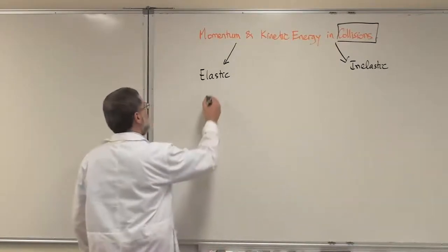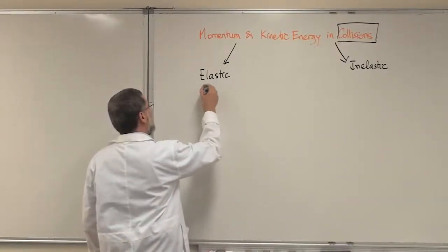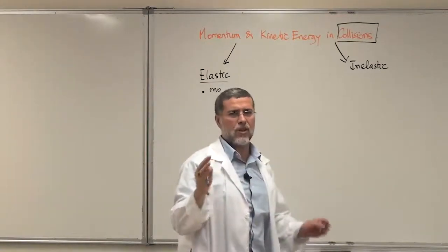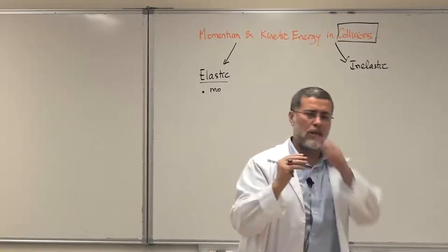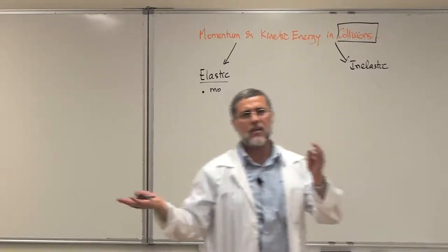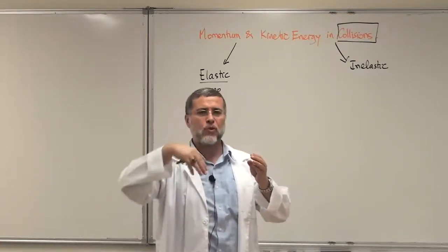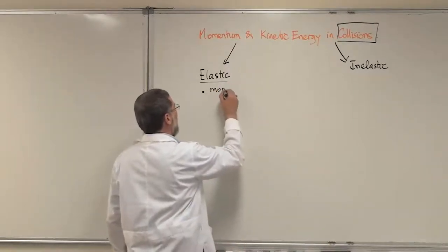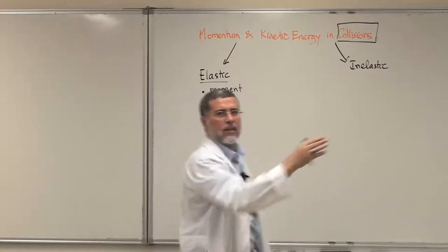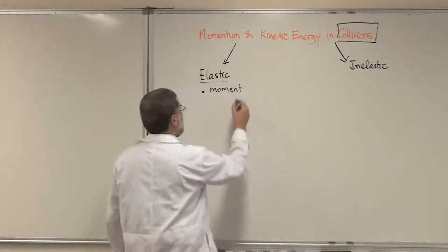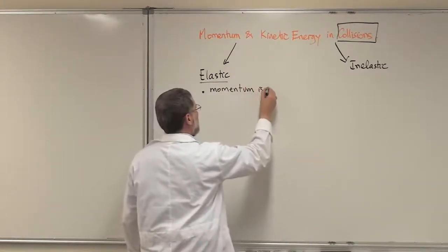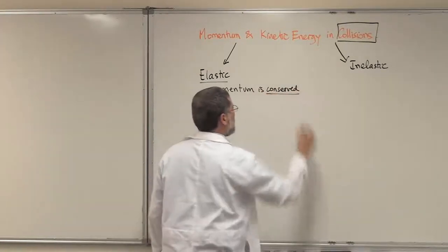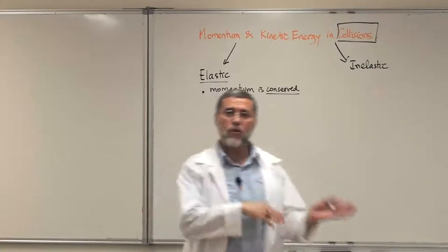In the elastic collision, momentum — and when I say momentum, I mean linear momentum. We are talking about linear motion here; later we will see angular motion where we have angular momentum. But here we are talking about linear momentum, straight-line motion. Momentum is conserved. Conserved means momentum before equals momentum after.